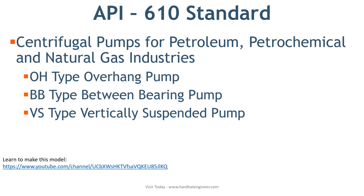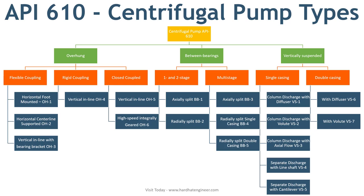It has categorized pumps based on construction. The chart shown here lists the classification of pumps based on API 610. There are three main categories: OH, BB, and VS. Under each of these categories, there are subcategories based on coupling type, number of stages, and casing.